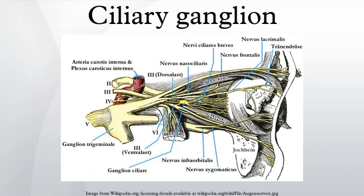Three types of nerve fibers run through the ciliary ganglion: parasympathetic fibers, sympathetic fibers, and sensory fibers. Only parasympathetic fibers form synapses in the ganglion. The other two types of nerve fibers simply pass through.